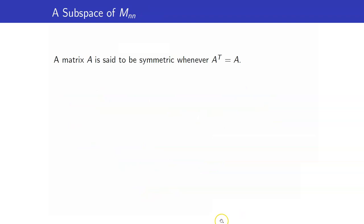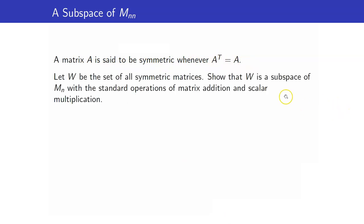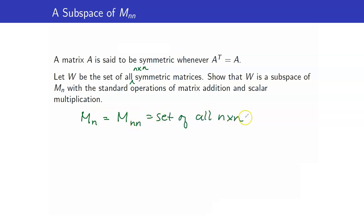Let us discuss some examples of subspaces. A matrix A is said to be symmetric whenever its transpose is equal to itself. Let W be the set of all n by n symmetric matrices. We will show that W is a subspace of Mn — the set of all n by n matrices — with the standard operations of matrix addition and scalar multiplication.